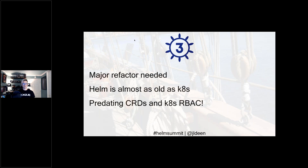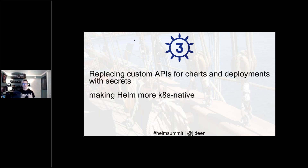Helm is almost as old as Kubernetes. Helm's first version came out in October 2014, and Kubernetes came out in May 2013 — they just celebrated their fifth anniversary. Because Helm predated CRDs and RBAC, in Helm 3 we really focused on replacing custom APIs for charts and deployments with secrets. Previously, when you run `helm upgrade install`, it stores upgrade history in a config map. Now we communicate directly with the Kubernetes API and all release history information gets stored as a secret object in Kubernetes.